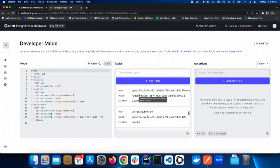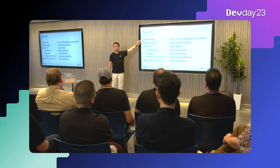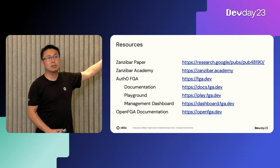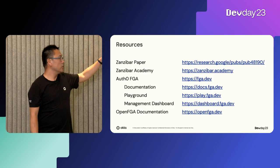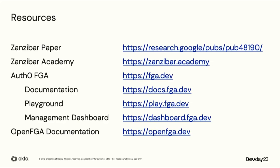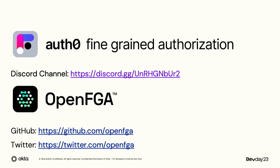Thank you very much. If you're interested, you can look up various resources: the original Zanzibar paper, our Zanzibar Academy which explains how the Zanzibar paper works, the FGA documentation, the Playground to play and learn, the management dashboard to create a store and hook up your application, and the OpenFGA documentation. You can also visit our Discord channel for questions, subscribe to our Twitter for latest updates, and visit our GitHub repository to see the OpenFGA code.